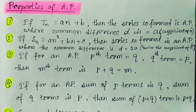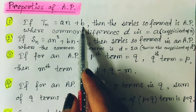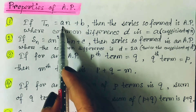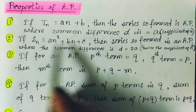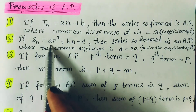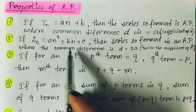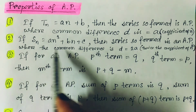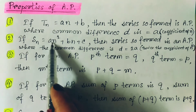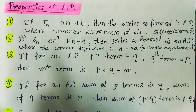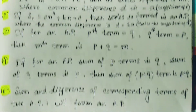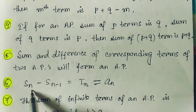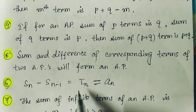Likewise, if Sn equals an squared plus bn plus c, then the series forms an AP, and the common difference d can be found directly as 2a, that is twice the coefficient of the n squared term. If the nth term expression is an plus b type, then d is the coefficient of n. If Sn is given in the form an squared plus bn plus c, then d equals twice the coefficient of n squared. Another property: Sn minus S(n minus 1) equals Tn, the nth term.